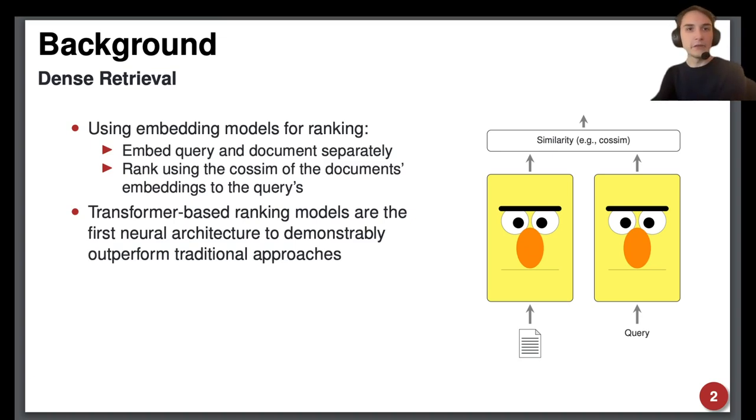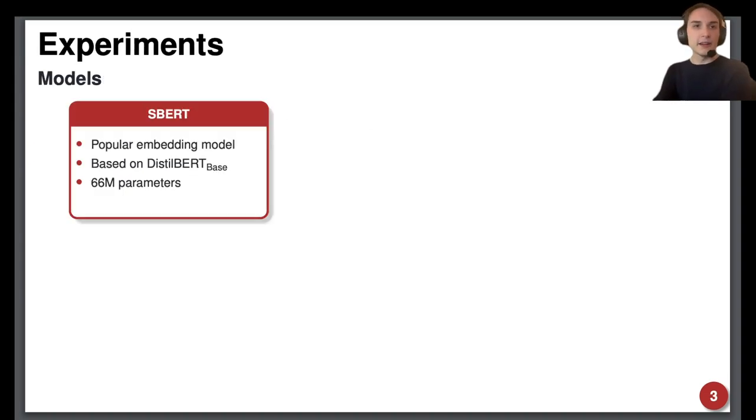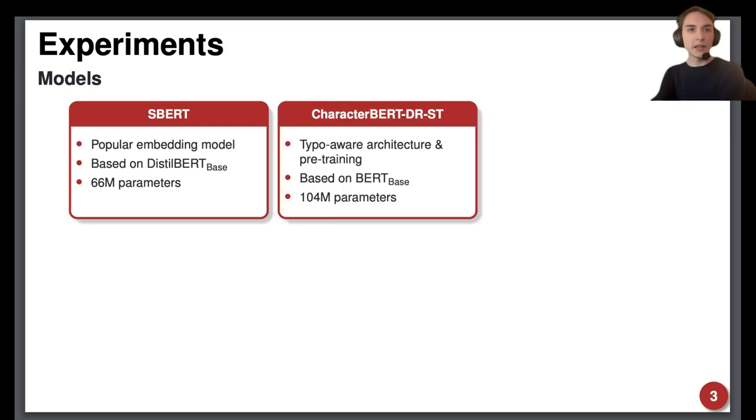In our experiment, we used various embedding models for dense retrieval and measured their robustness. The embedding models are Sentence-BERT, a popular DistilBERT-based embedding model, CharacterBERT, a modified version of BERT that was made typo-aware by replacing the wordpiece tokenizer with a character-level tokenizer and fine-tuning for robustness.